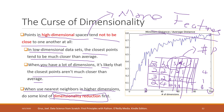That is dimensionality reduction, which includes feature engineering — creating new features and dropping less important ones. Another approach is Principal Component Analysis (PCA), which reduces the number of dimensions. We will cover PCA later this semester.